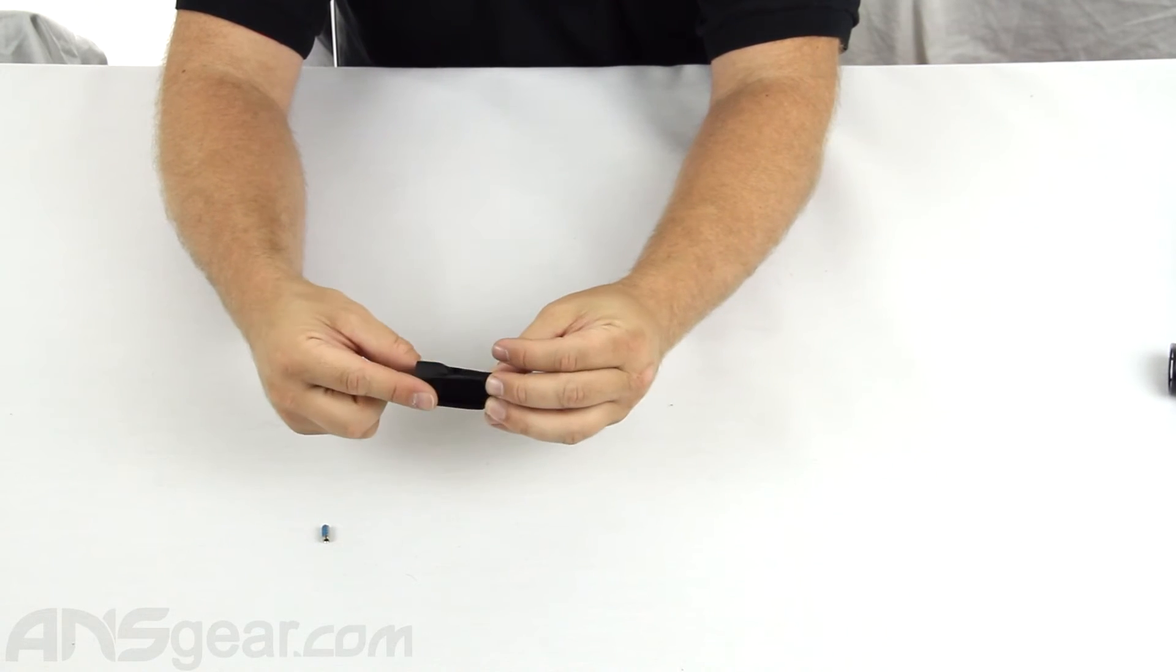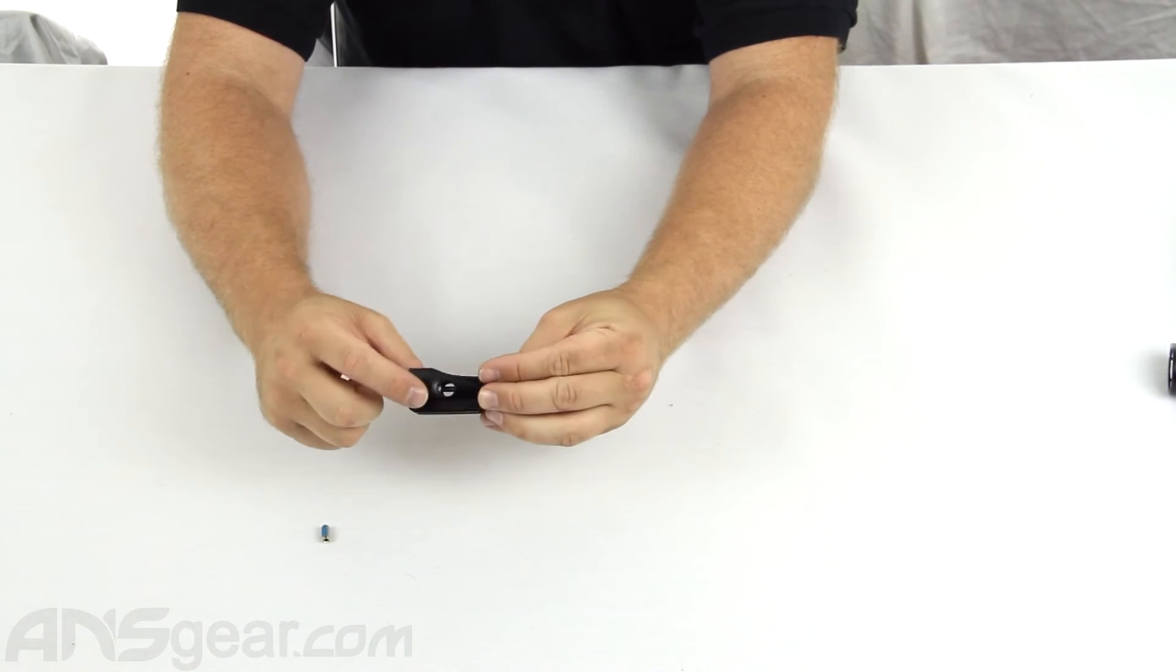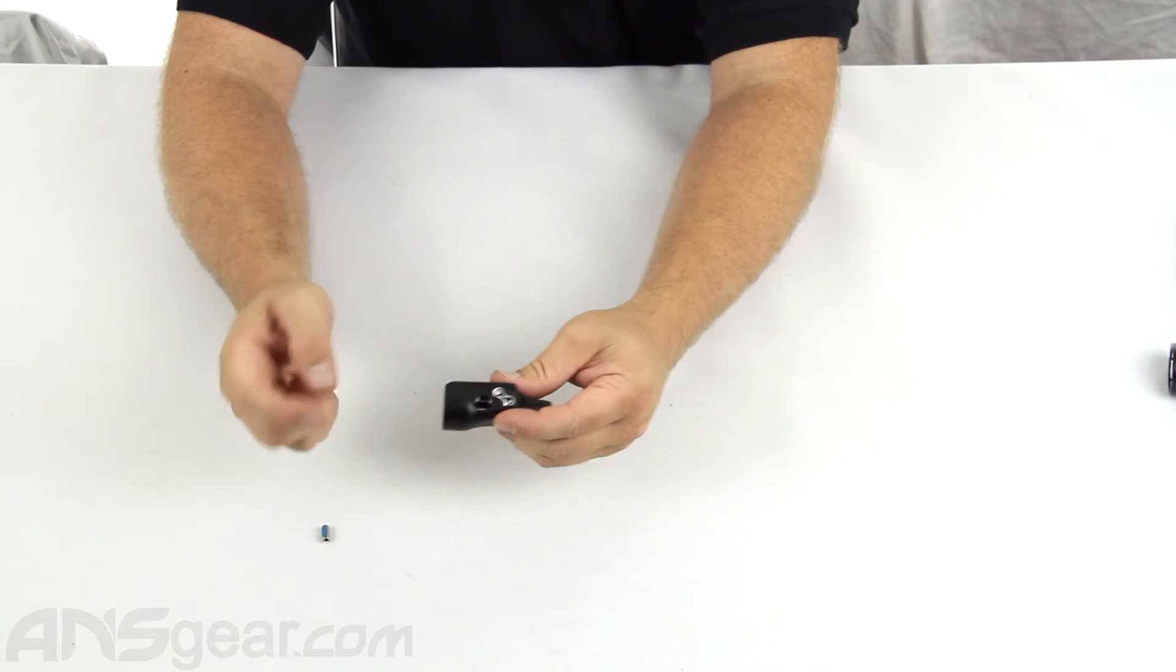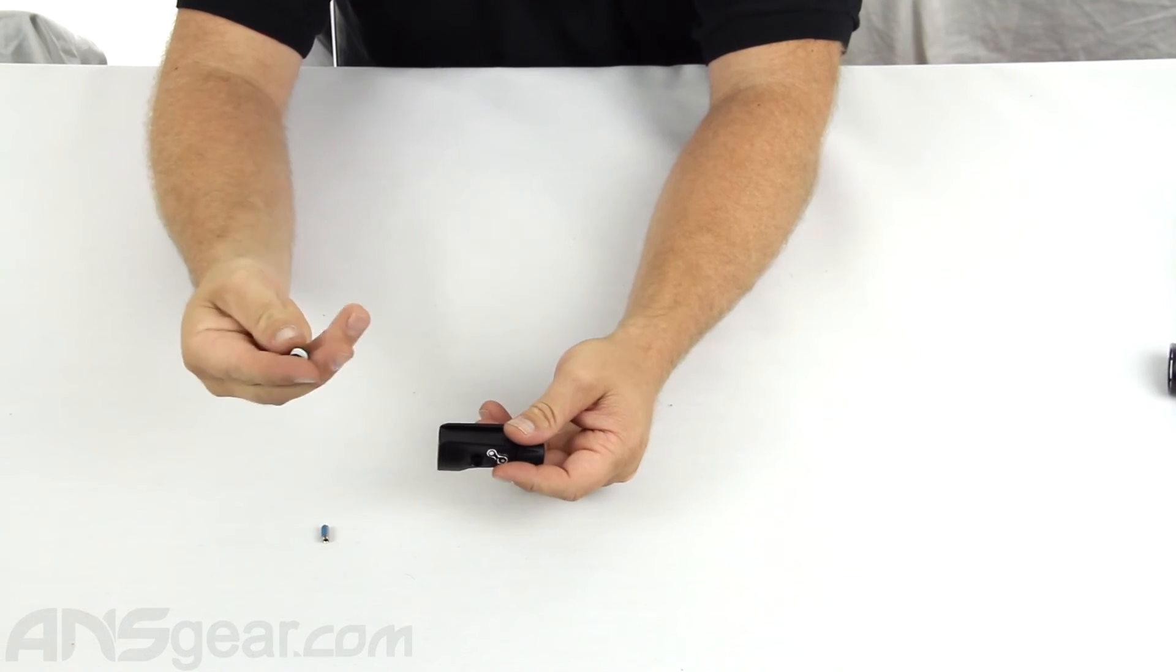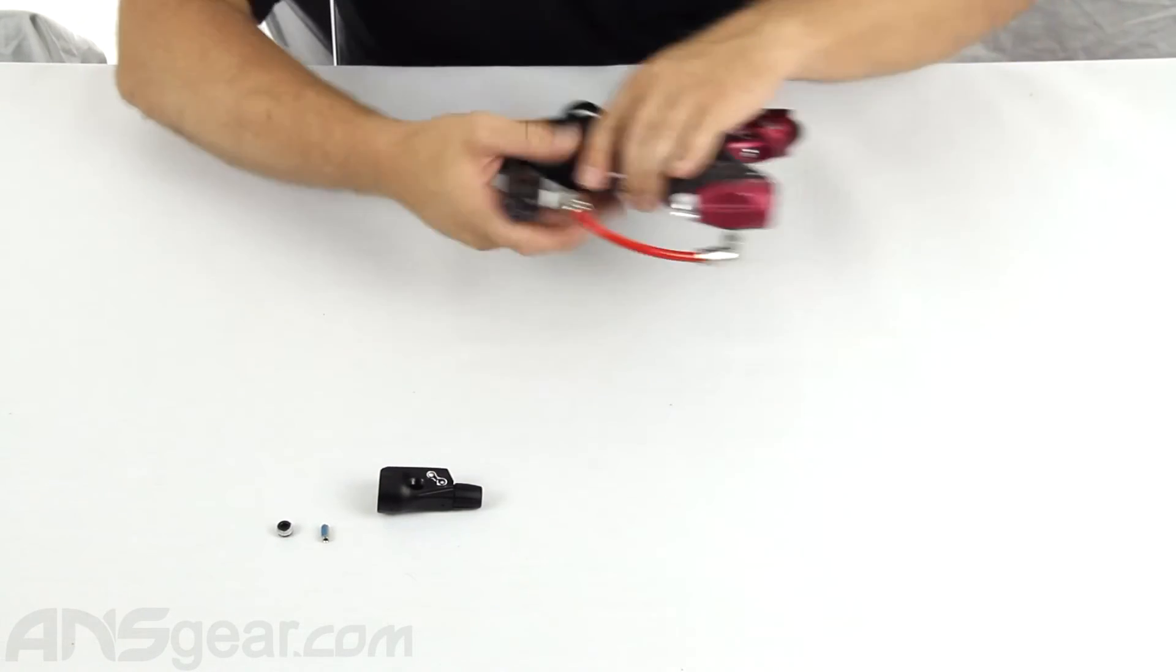But as you can see, this ASA doesn't have any plugs. Both holes are open on the side. So you can determine which side you want your macro line to come out of and which side you want to plug. So that's a nice feature to have the options on there.